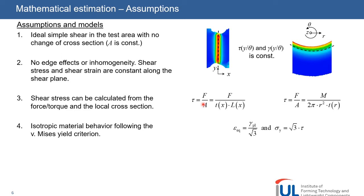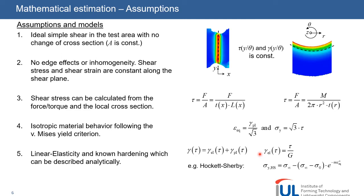Then we use the isotropic von Mises yield criterion, meaning that the equivalent strain is calculated by the plastic shear strain gamma divided by the square root of 3, and the flow stress is calculated by the square root of 3 multiplied with the shear stress tau. Last of all, we use linear elasticity and we need to know the hardening which can be described analytically. For example, we can use the Hockett-Sherby hardening law. Bringing all these equations together, we can calculate the local stresses and strains on the specimen.